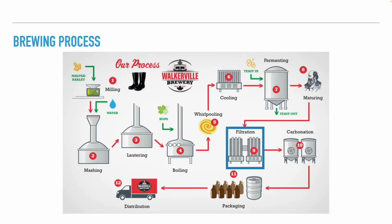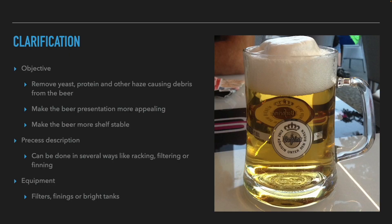After the maturation period, the beer is filtered. The objective of filtration is to remove yeast, proteins, and other haze-causing particles from the beer to make it more appealing and more shelf-stable. The process can be done in several ways, from racking and fining agents to actual filtering of the beer. The equipment needed is filters, fining agents, and/or bright tanks.